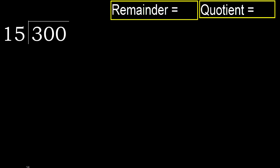300 divided by 15. 3 is less, therefore next. 30 is not less, therefore with 30.